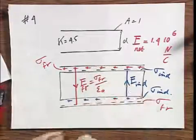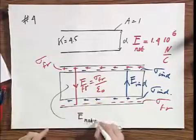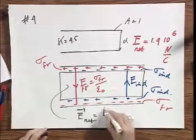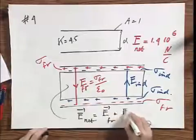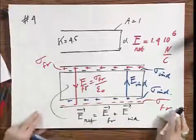And what you have in here is, of course, the net electric field, E-net, which is the vectorial sum of E-free plus E-induced.